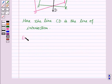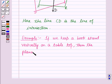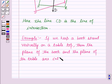Now let us see one example for this, and that is, if we keep a book stand vertically on a table top, then the plane of the book and the plane of the table are intersecting planes.